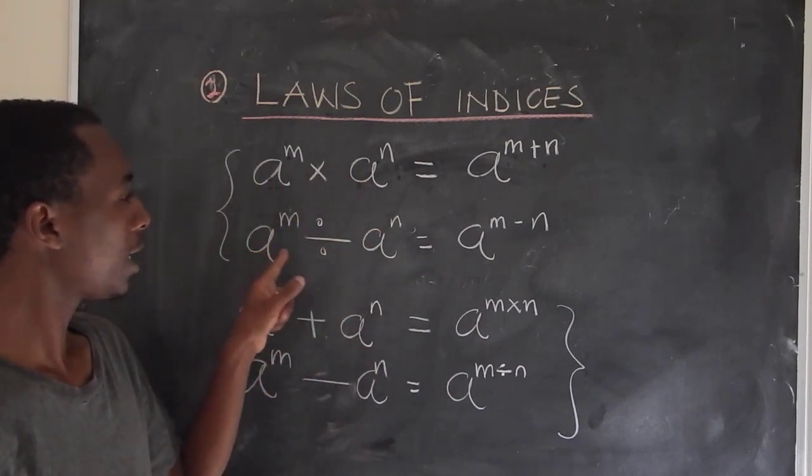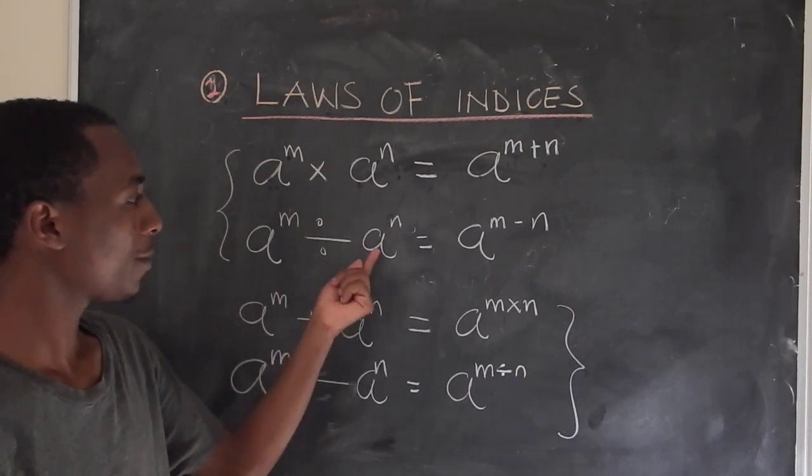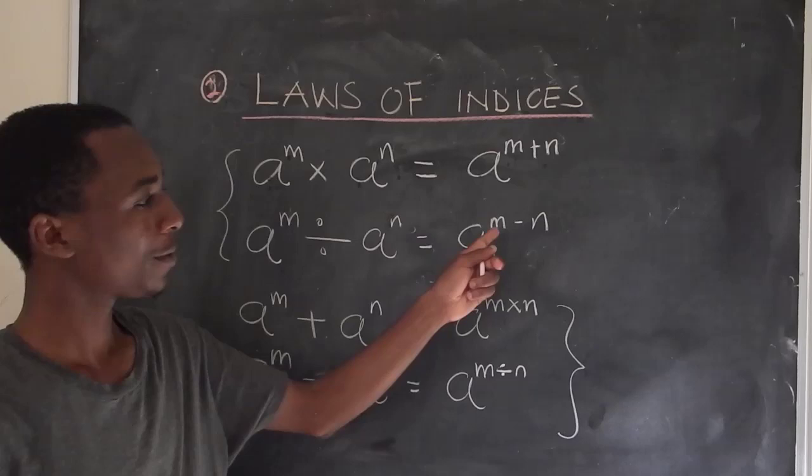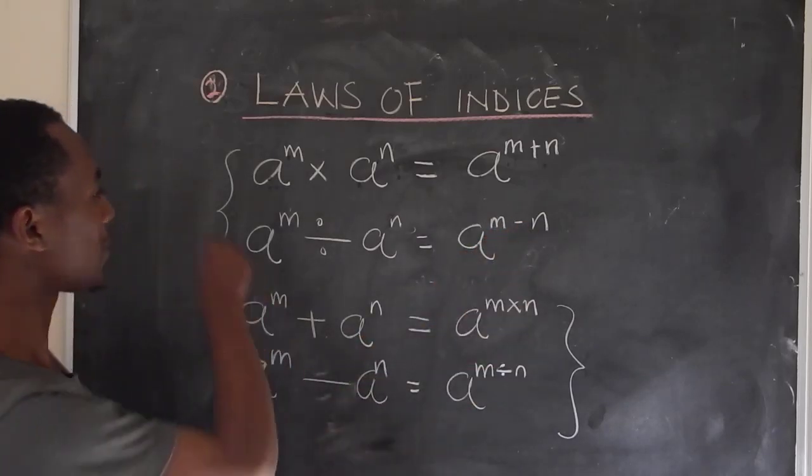If you have a number a to the power m divided by the same number, the same base to the power n, this can be simplified as a to the power m minus n. So this is correct.